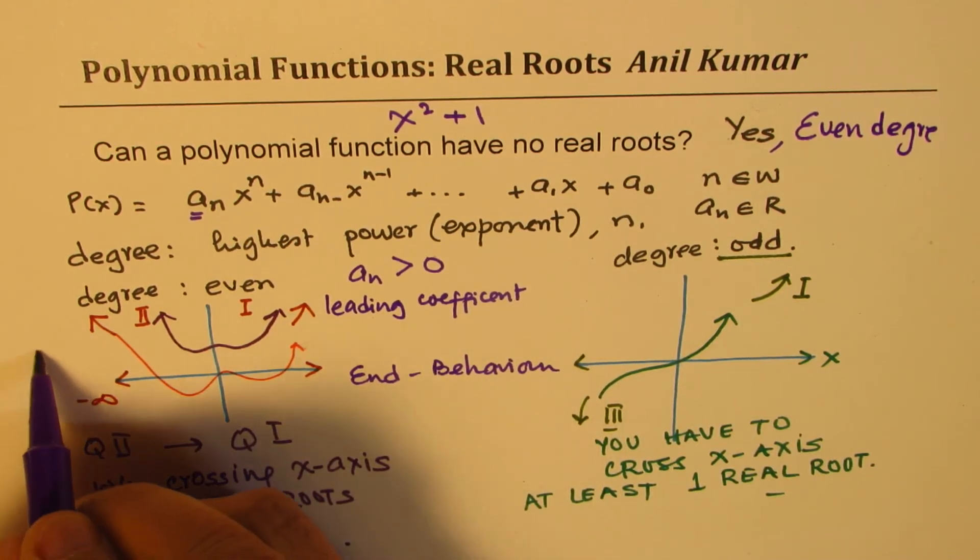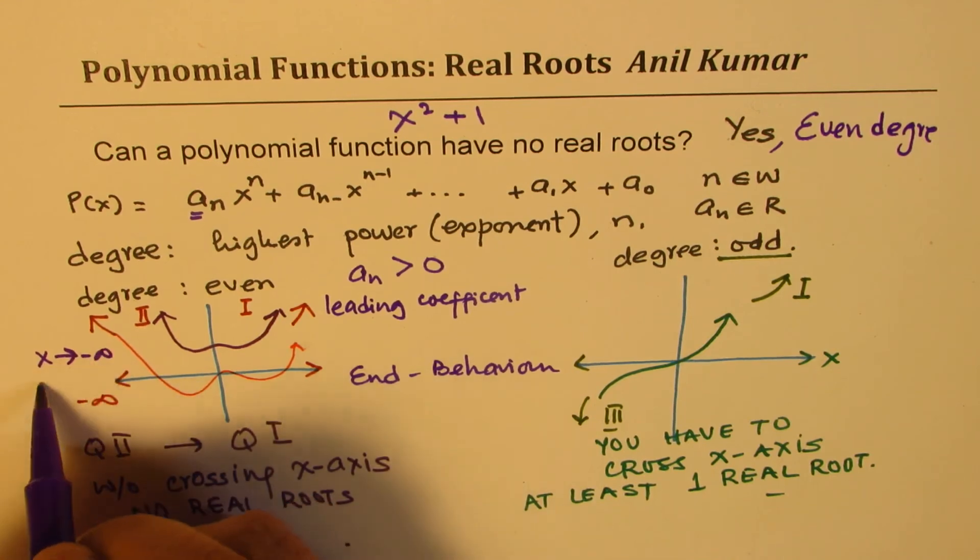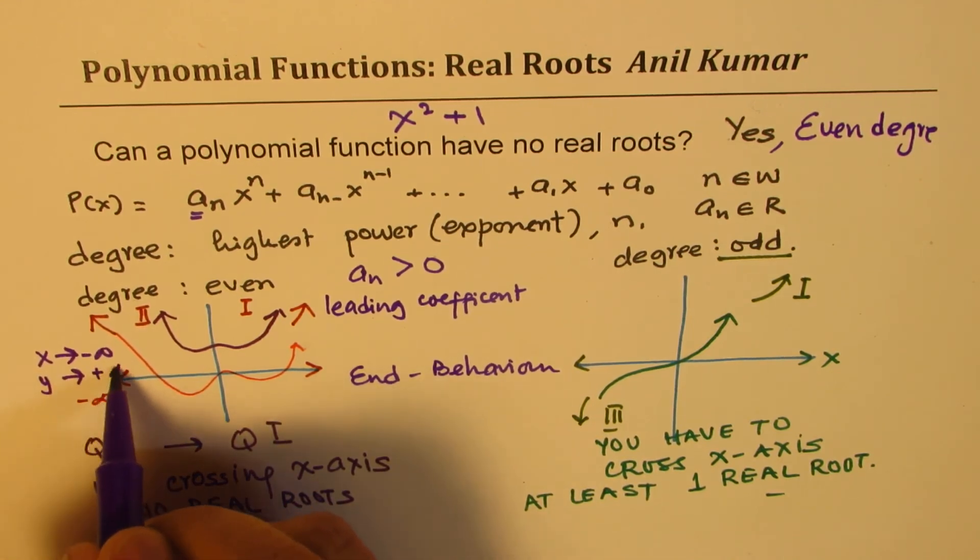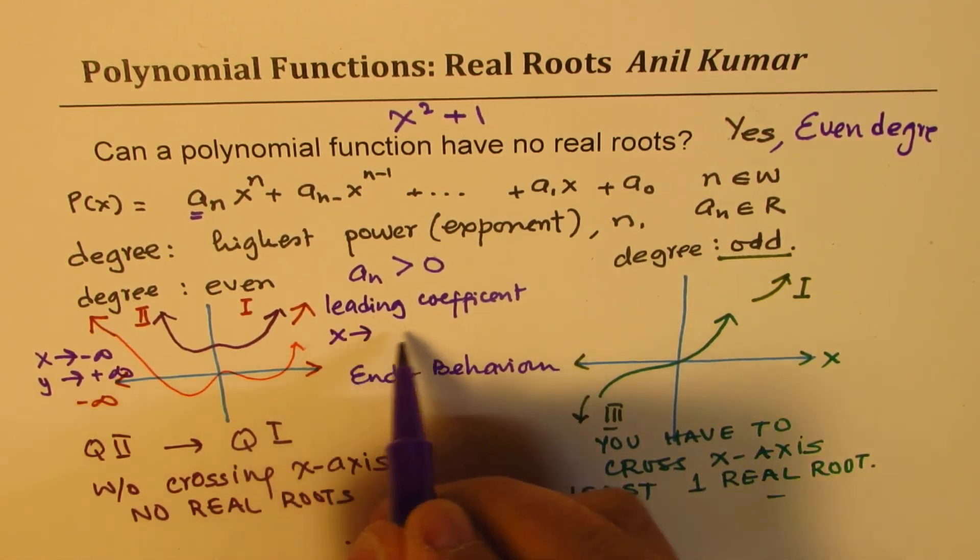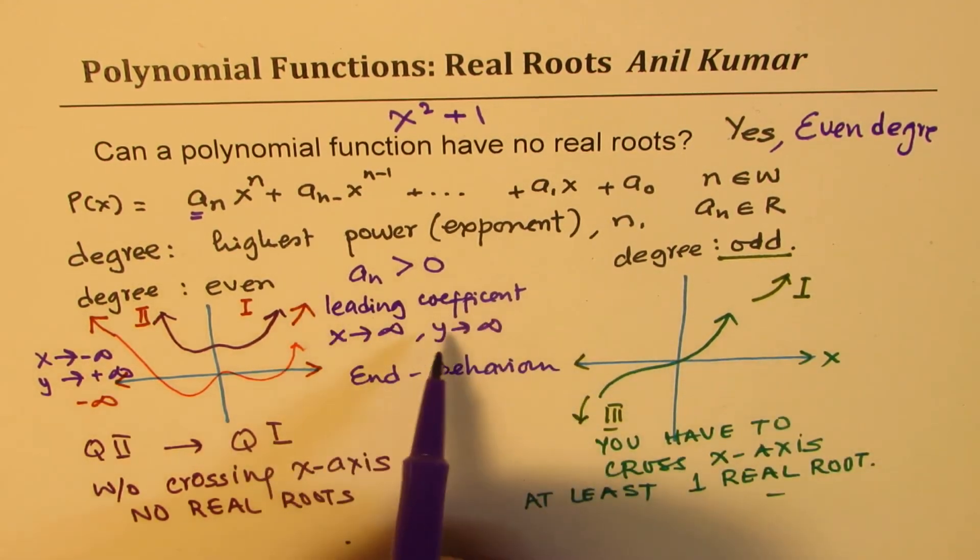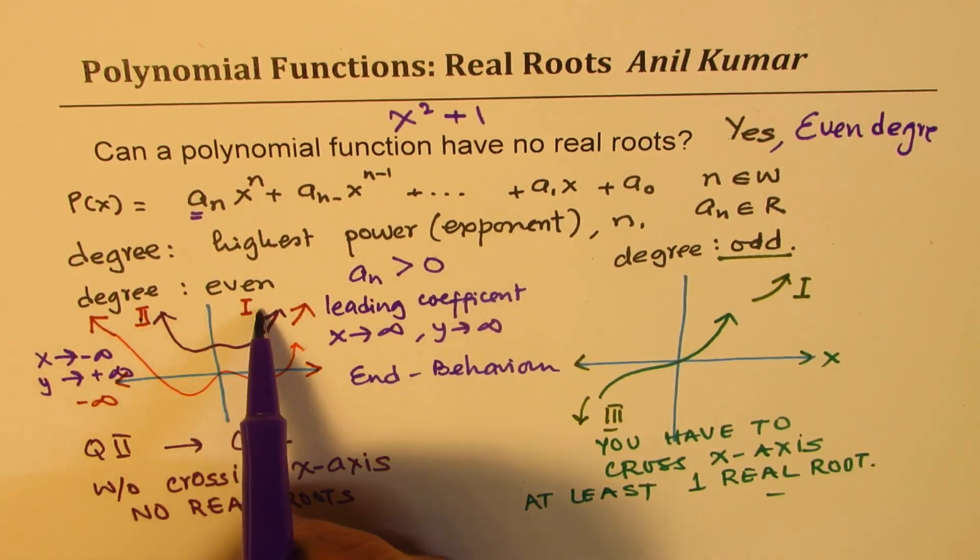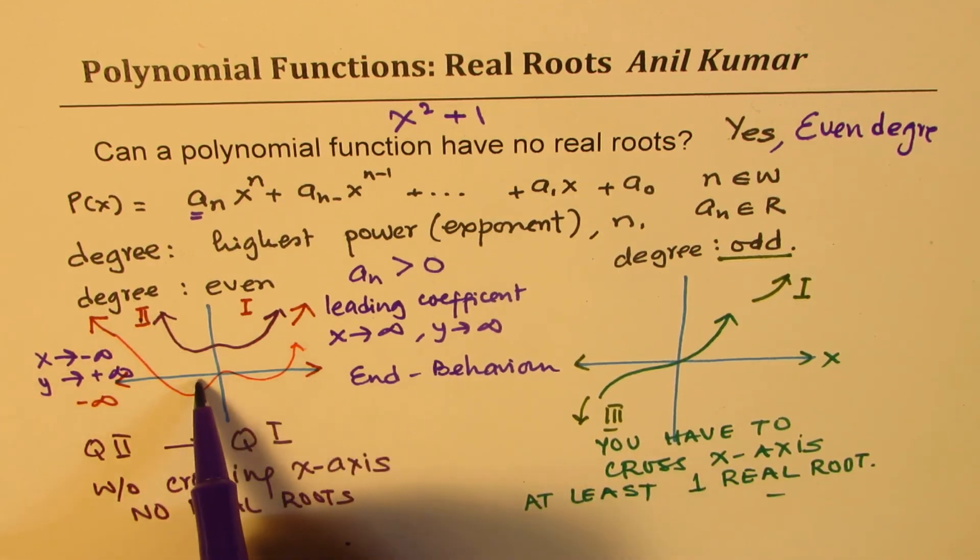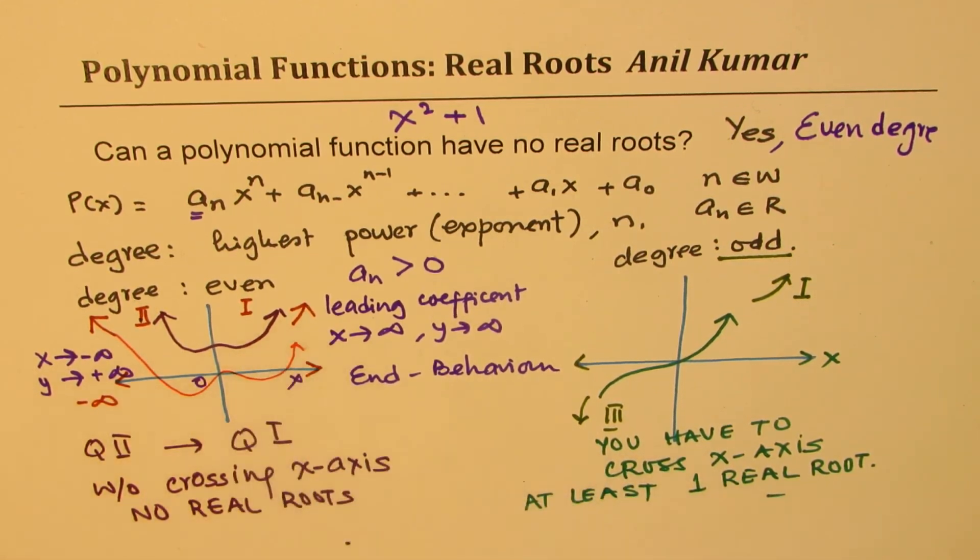So when x approaches negative infinity, y approaches positive infinity. When x approaches positive infinity, y approaches positive infinity. So you are going from quadrant two to one, and you can go without crossing the x-axis. That is, without having a real root. So that's all we can explain. I hope it is straightforward.